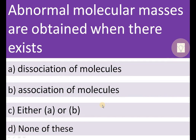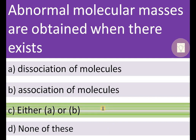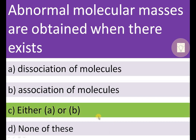Abnormal molecular masses are obtained when there exists dissociation of molecules, association of molecules, either A or B, or none of these. If molecular masses show any change, that may be due to either dissociation or association. Therefore, option C is the correct answer.